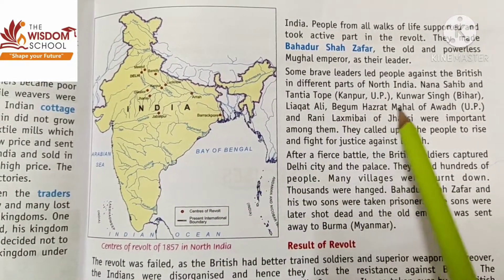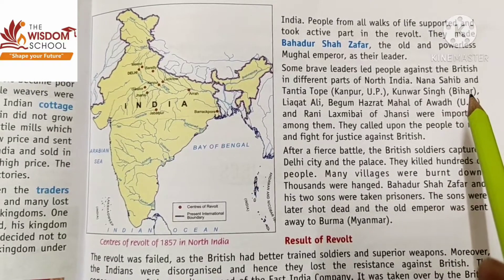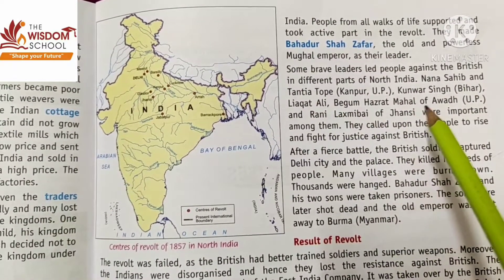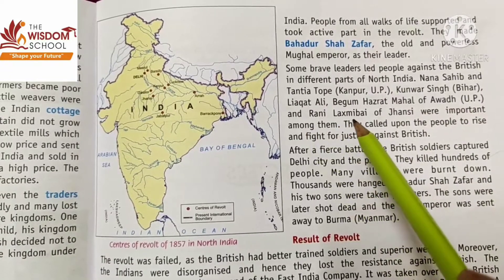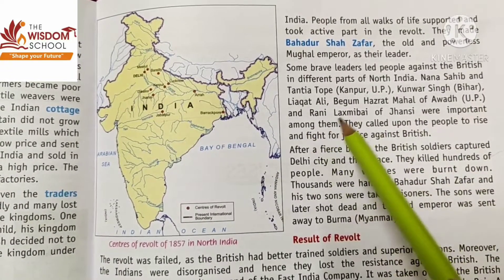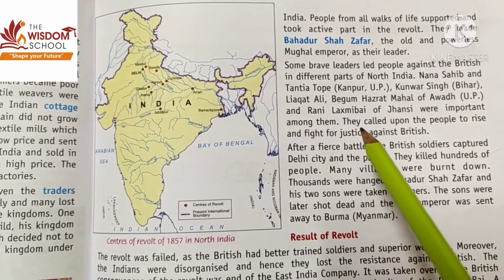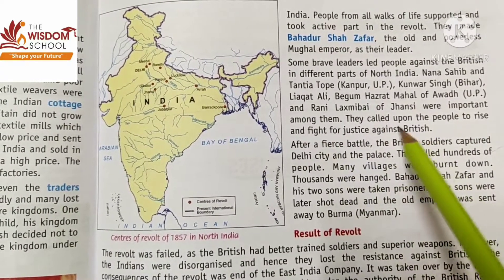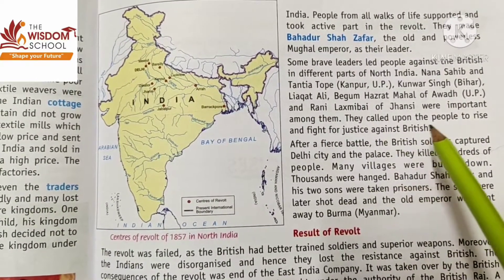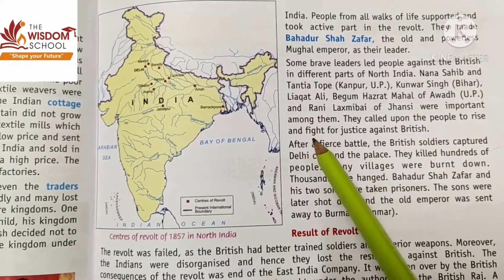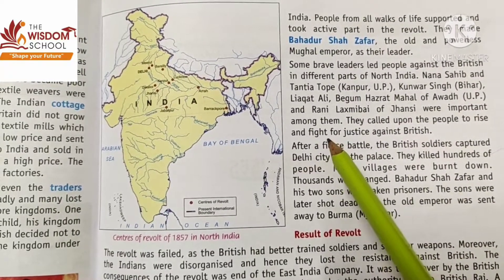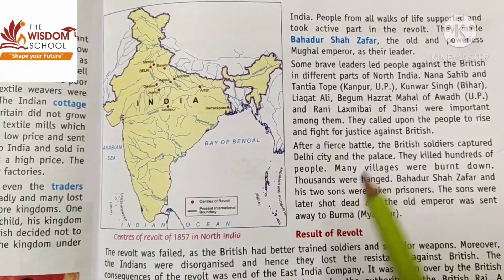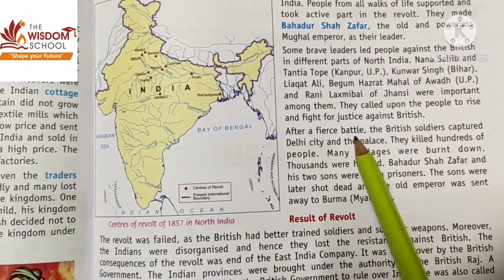Nana Sahib and Tatya Tope led Kanpur in UP, Kunwar Singh led Bihar, Liaquat Ali and Begum Hazrat Mahal of Awadh in UP, and Rani Lakshmi Bai of Jhansi were important leaders. They called upon the people to rise and fight for justice against the British, urging unity.